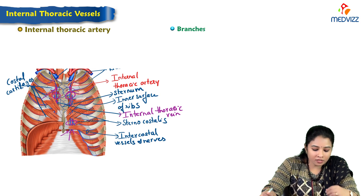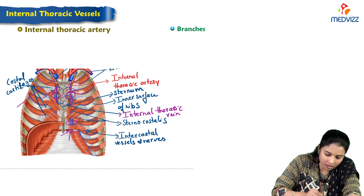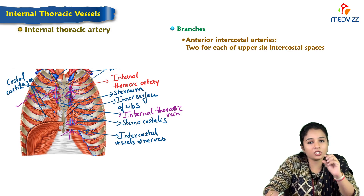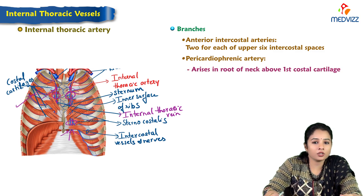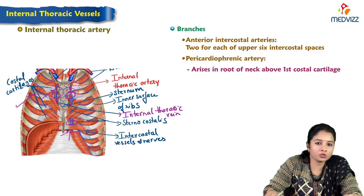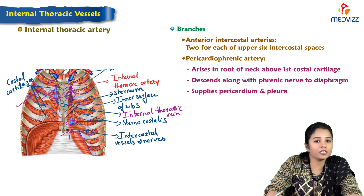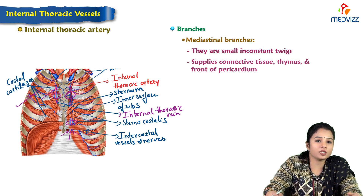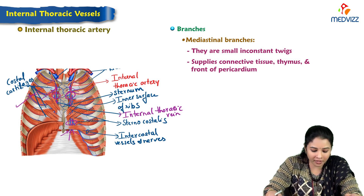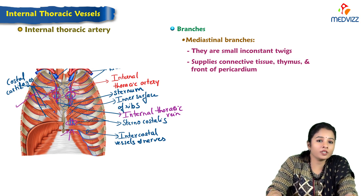The branches of the internal thoracic artery are: anterior intercostal arteries — short, small branches lying in the intercostal spaces; pericardiophrenic artery — arises at the root of the neck above the first costal cartilage, descends along the phrenic nerve to the diaphragm, and supplies the pericardium and pleura; and mediastinal branches — small inconstant twigs supplying connective tissue, thymus, and the front of the pericardium.